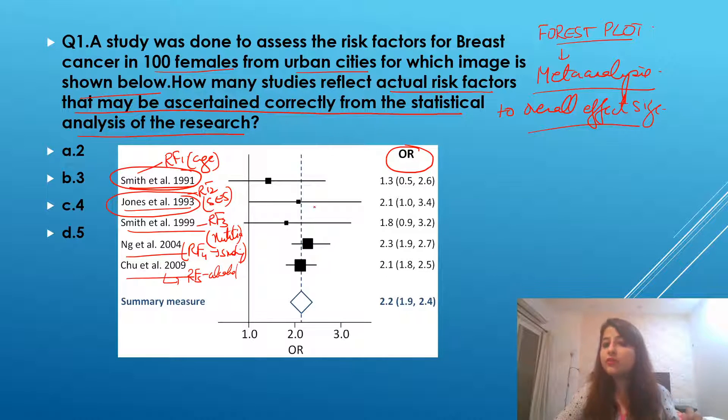For that, what you have to see over here is the odds ratio. How are you going to interpret it? Look at the odds ratio. For the first study, the odds ratio is 1.3 and the interval is 0.5 to 2.6. For the second, it is 2.1. Interval is 1 to 3.4, lower limit and upper limit.